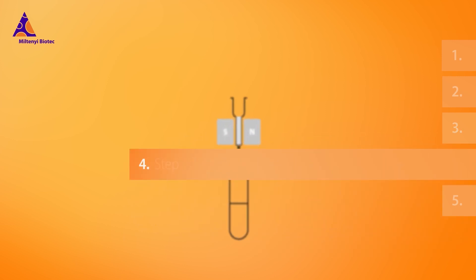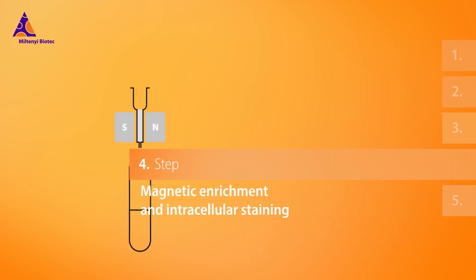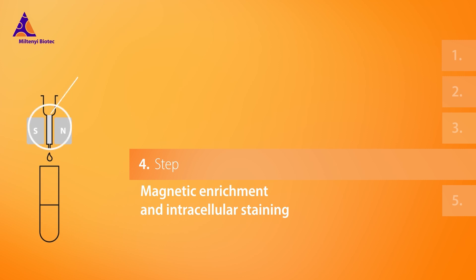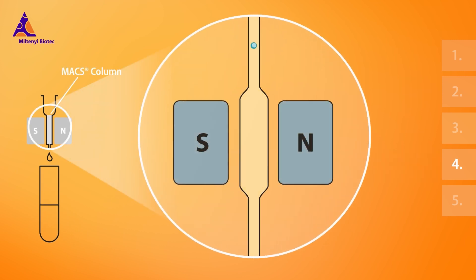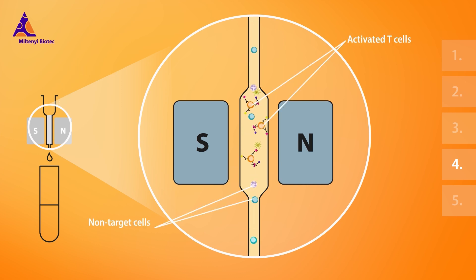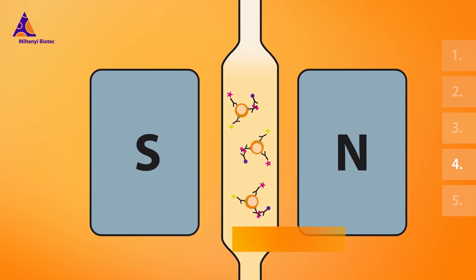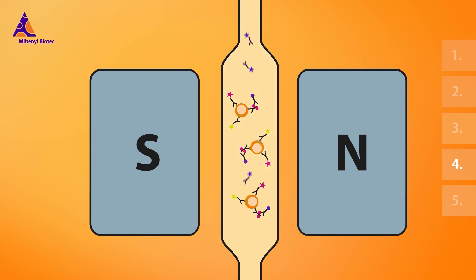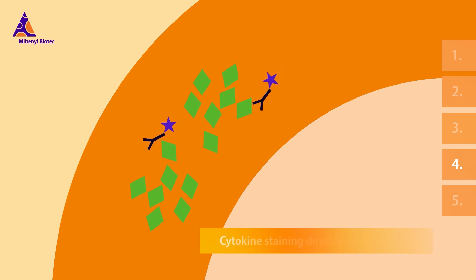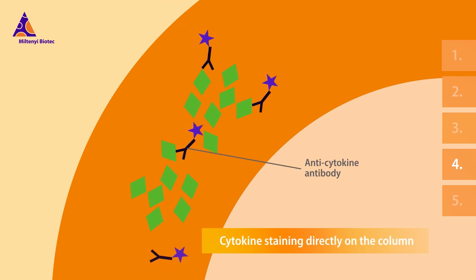Continue with magnetic enrichment and intracellular staining. Transfer your cells onto a MAX column. Labeled activated T-cells will be retained in the column, while other cells will flow through. To prevent the loss of activated T-cells, permeabilize the cells and stain cytokines and additional surface markers directly on the column.